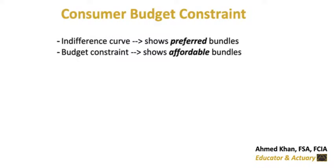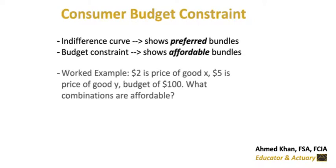This is the problem we will be solving. Suppose one good costs two dollars and the other costs five dollars. The consumer has one hundred dollars of income. What are the possible combinations of the two goods that the consumer can afford?